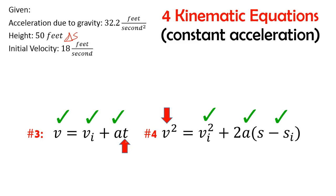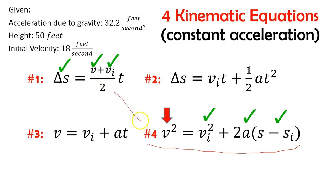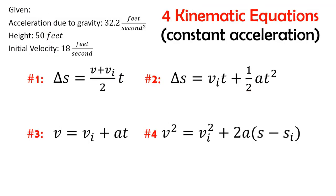That's one way we can approach this problem, but there's another way. We can still start with equation number four — using initial velocity, acceleration, delta s, and changing height to get our final velocity — and then apply equation number one, which has final velocity, initial velocity, and delta s. If we solve that for time, we can get the time it takes to make this trip. So that's a second possibility: solving with equation four and equation one.